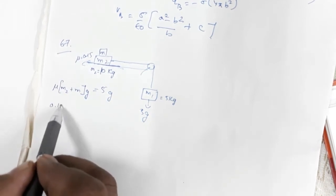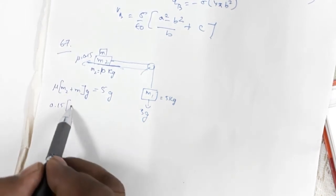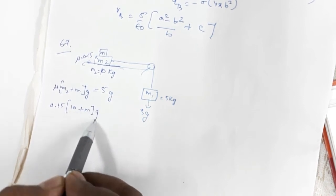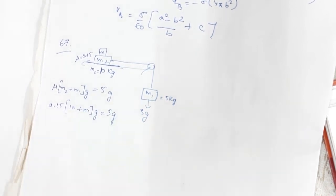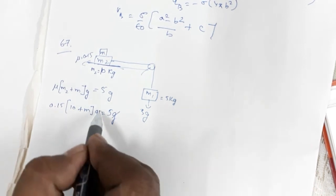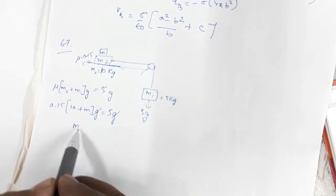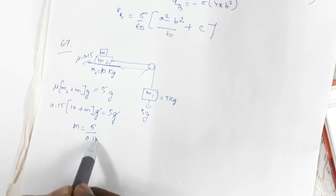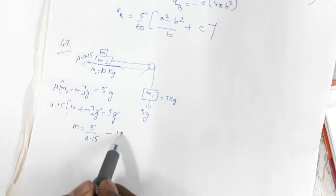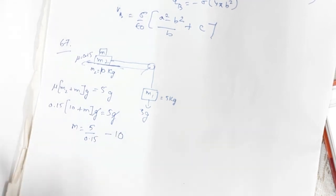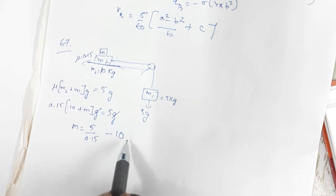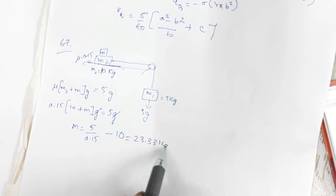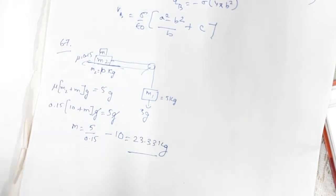In the other direction, the friction force is μ(m2 + m)g, where μ = 0.15. So: 0.15 × (10 + m) × g = 5g. The g cancels, giving m = 5/0.15 − 10 = 23.33 kg.